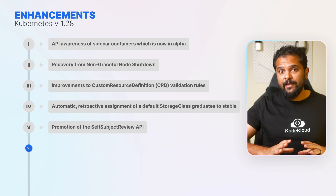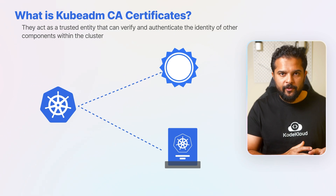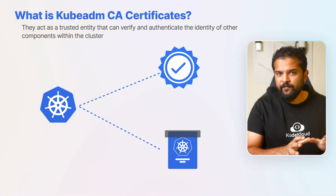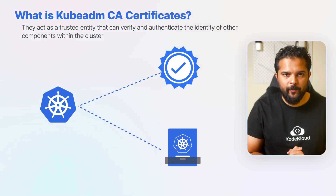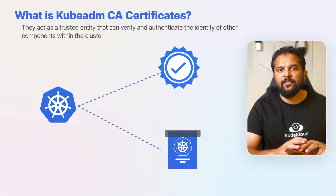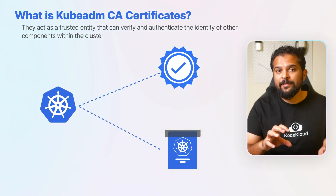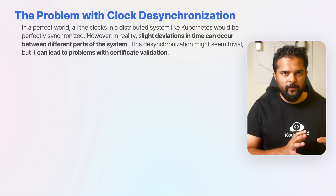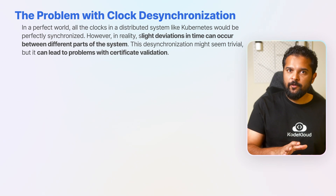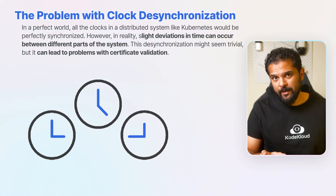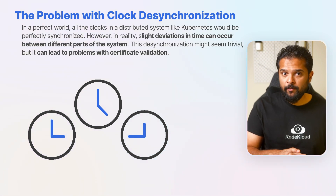The next item is backdating generated kubeadm CA certificates. In a Kubernetes cluster, the kubeadm CA — the certificate authority certificates — play a vital role in ensuring secure communication between various components. They act as a trusted entity that can verify and authenticate the identity of other components within the cluster. In a perfect world, all the clocks in a distributed system like Kubernetes would be perfectly synchronized. However, in reality, slight deviations in time can occur between different parts of the system.